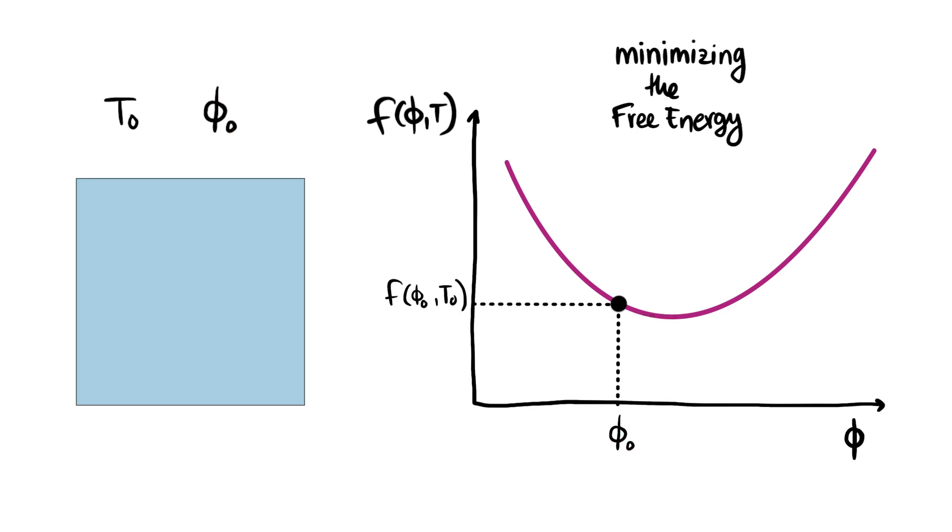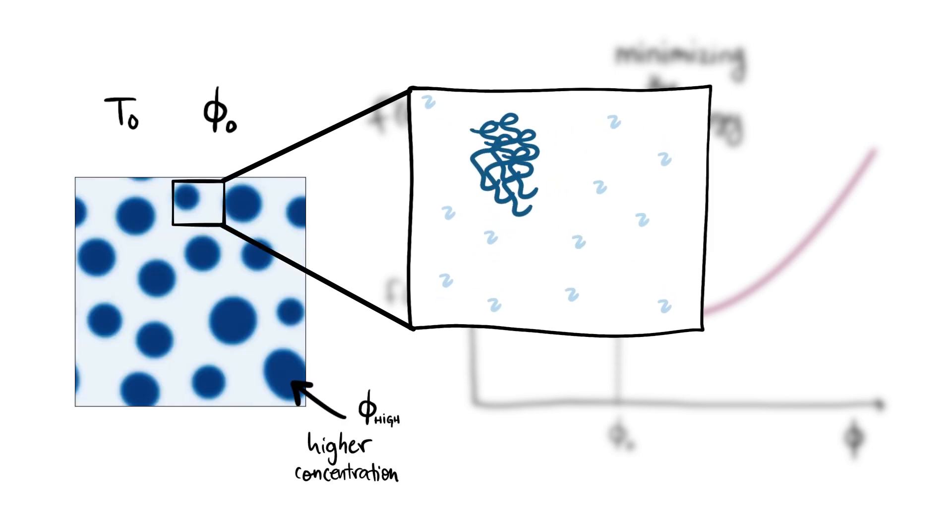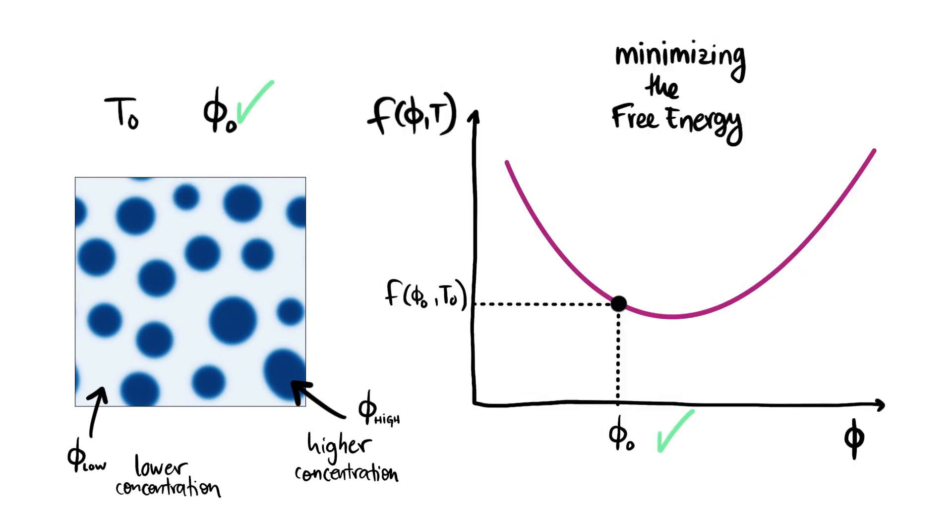But there's one clever thing we can do. Imagine that we redistribute the molecules making part of the system at a higher concentration and the rest at a lower concentration, for instance half and half. We are only moving molecules around so the average concentration is still the same.